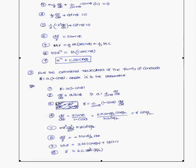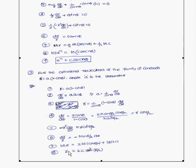Now replace dr/dθ with −r² dθ/dr. Simplifying gives dr/r = −tan(θ/2) dθ. Integrating: log r = 2 log cos(θ/2) + log 2c. Removing the logarithms from both sides gives r = 2c cos²(θ/2). That concludes the discussion of orthogonal trajectories. Thank you.